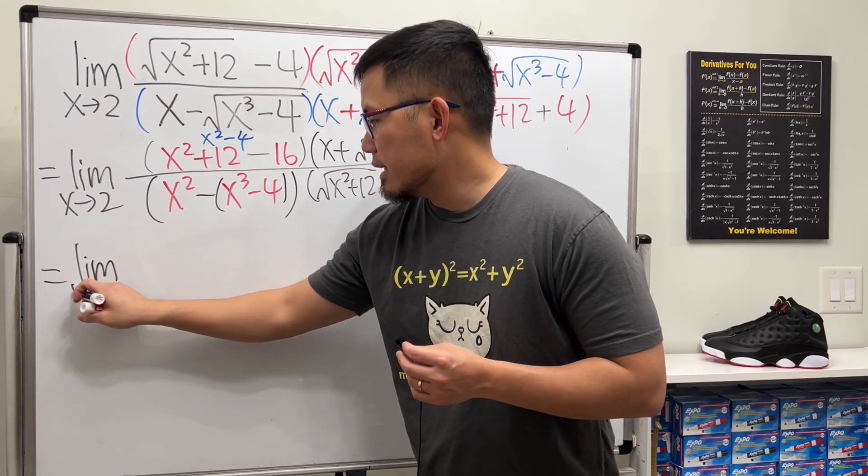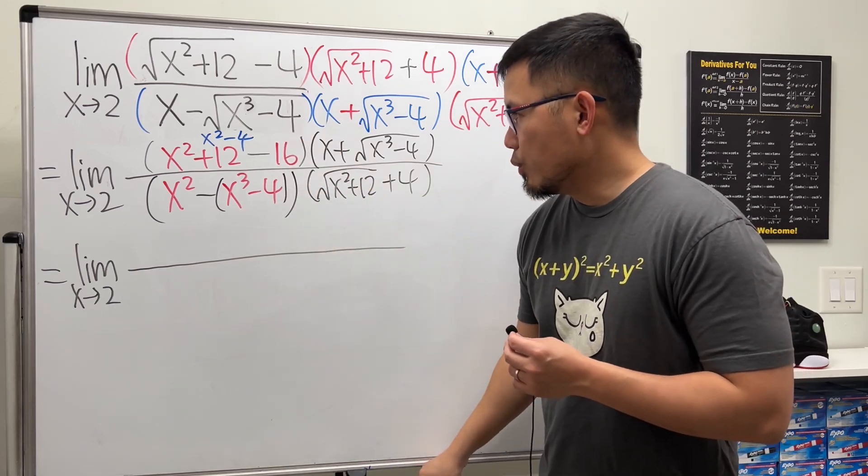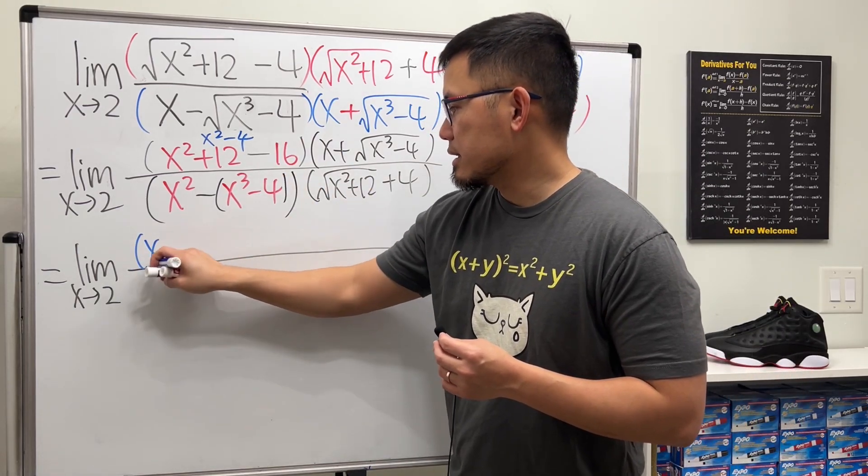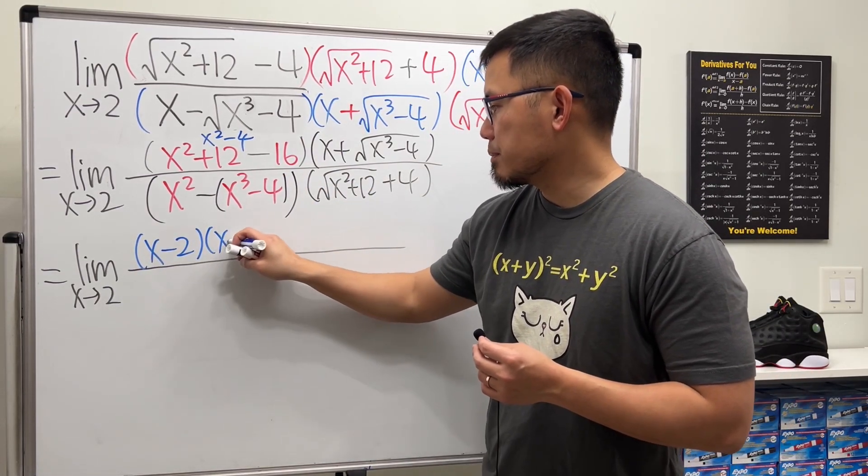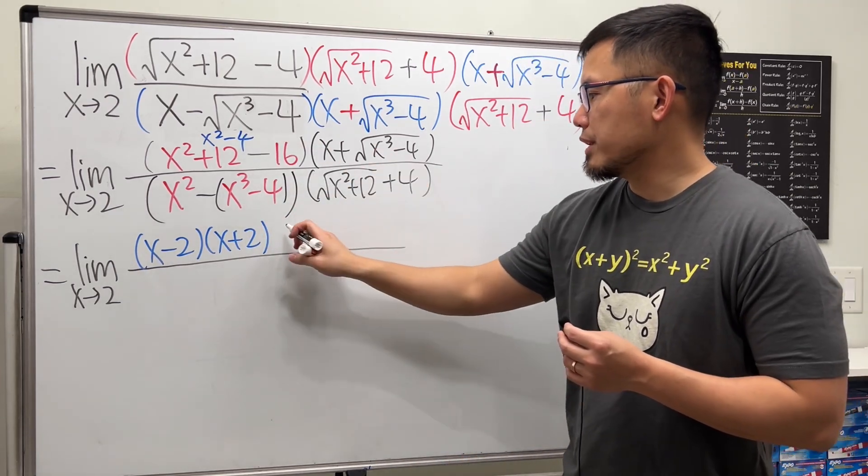And let me just write that down. We have the limit as x approaching 2. So we will get x minus 2 times x plus 2. The difference of two squares formula. And then this right here stays.